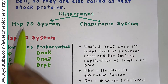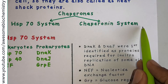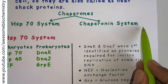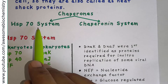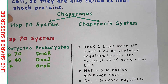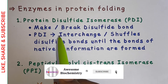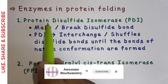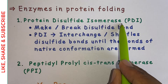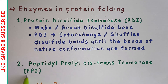The mechanism of action of both the HSP70 system and the chaperonin system will be covered in the next video. Along with these two systems, there are also two enzymes that can help in protein folding. The first is protein disulfide isomerase, abbreviated PDI, and the second is peptidyl-prolyl cis-trans isomerase, abbreviated PPI.